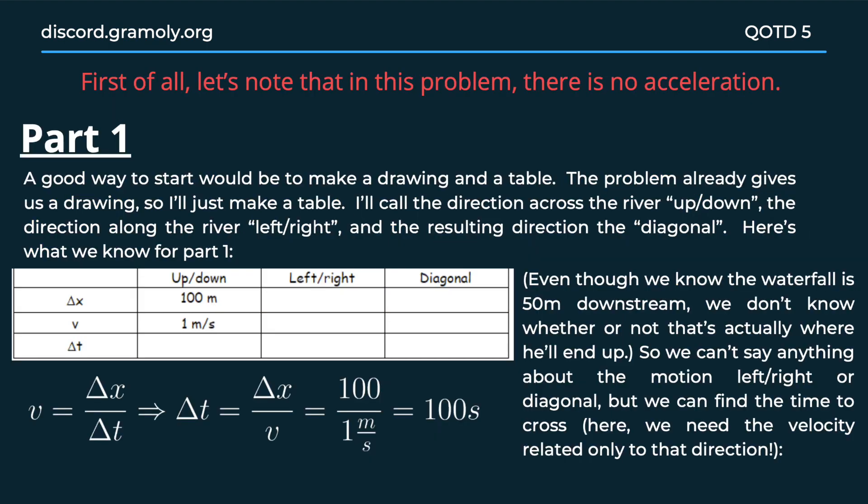Moving on to the solution for the first part. We know that velocity is the change in displacement in a given amount of time. We know that the displacement is 100 meters and the velocity of the swimmer is 1 meter per second. From that we can figure out that the time interval will be 100 seconds, which is the answer to the first part.